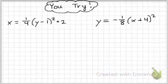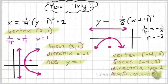At this point, I'd like you to try these two problems. Start with the vertex, sketch which direction your graph is opening in, and then find your p-value to find the rest of your features. Thank you for giving that a try.